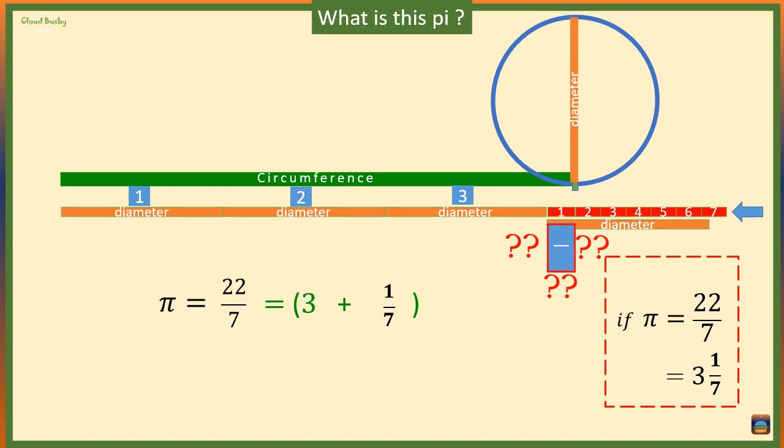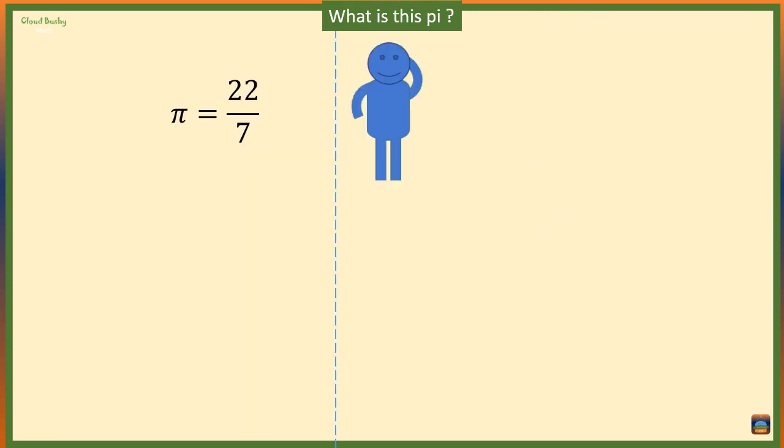That means this little bit more diameter is not 1/7 of the diameter. Therefore, 22 over 7 cannot be equal to pi. It is clear that 22 over 7 is not equal to pi.